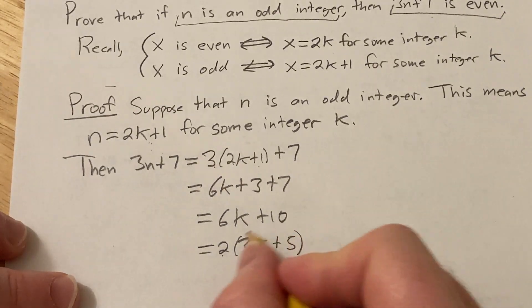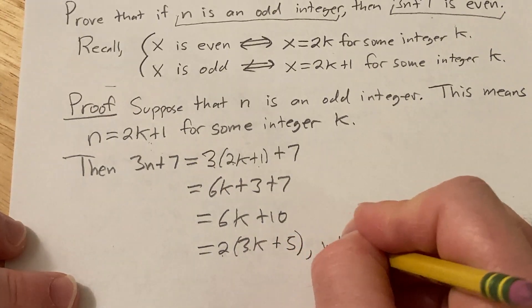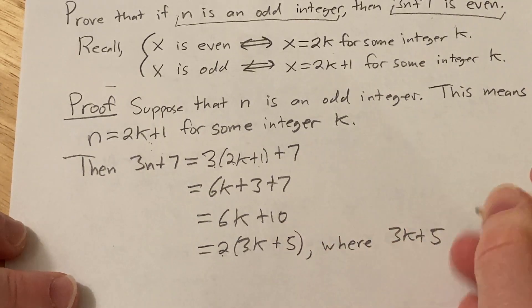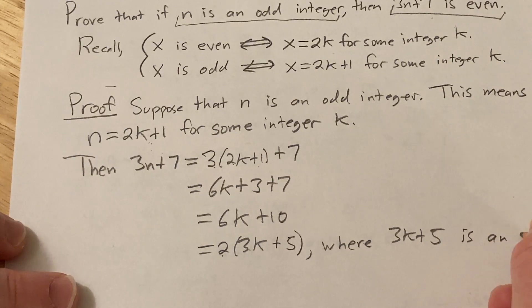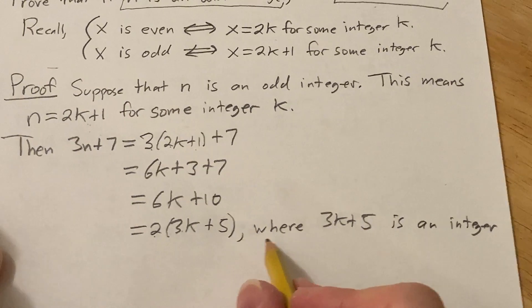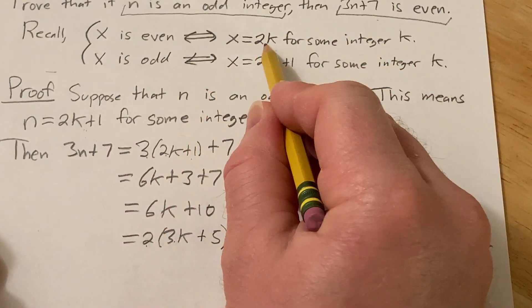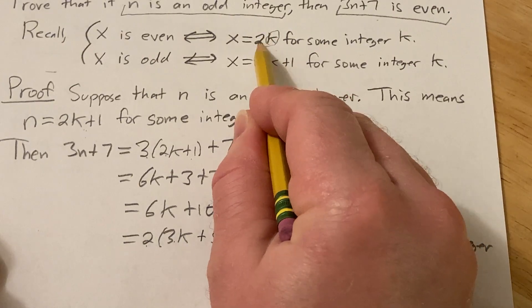So what we need to specify is that this is an integer, so you want to say where 3k plus 5 is an integer. So it's really important to specify that this is an integer, right? Because in the definition, it says that it's equal to 2k for some integer k, so this has to be an integer. It's 2 times an integer.